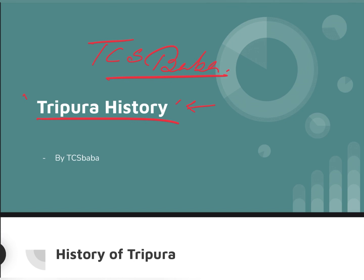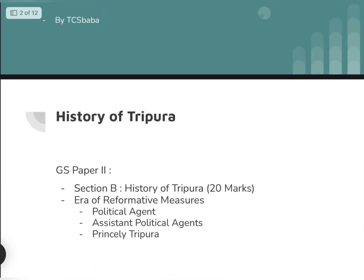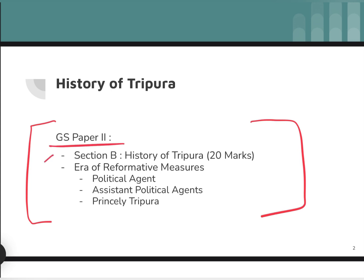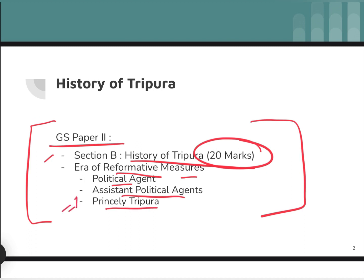This is the first video in a set of videos regarding the Tripura history syllabus — specifically the Tripura portion. Right now I am focusing on Tripura history, which is GS Paper 2, Section B — History of Tripura, worth 20 marks. It covers the era of reformative measures, political agent, assistant political agent, and princely state. Today I will be talking about the princely state and the overall chronological history of Tripura.